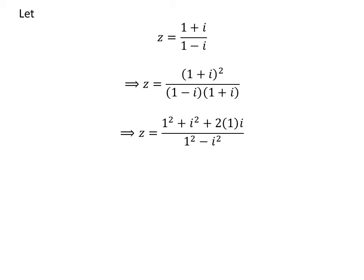Expansion of (1+i)² in the numerator gives us 1² + i² + 2(1)(i), and the multiplication of (1-i) and (1+i) is 1² - i².